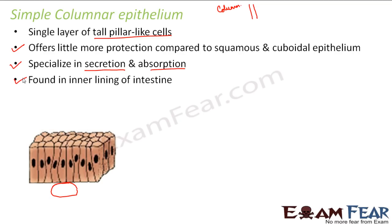Why does the intestine need protection? The intestine needs protection against undesirable substances like bacteria — if bacteria or other microbes enter the intestine, they can cause problems with health, digestion, and stomach infection, disrupting the body. At the same time, the intestine needs to absorb nutrients from food. So the intestine needs protection plus absorption, and that is why we have simple columnar epithelium and not cuboidal epithelium in this case.